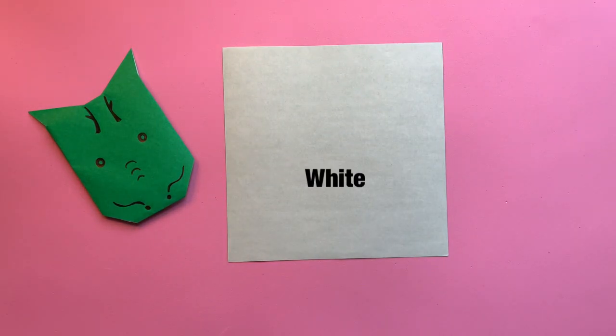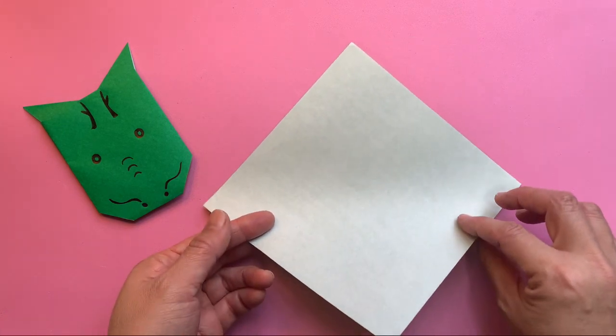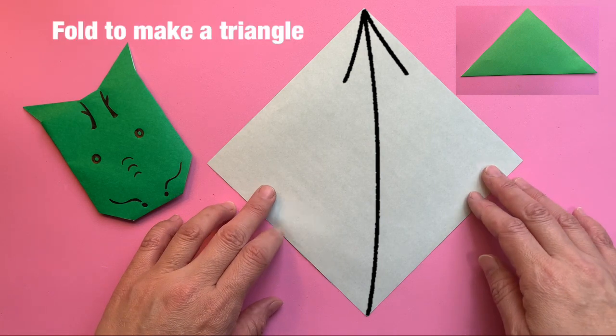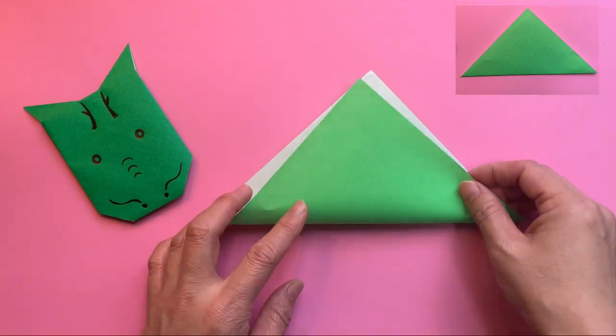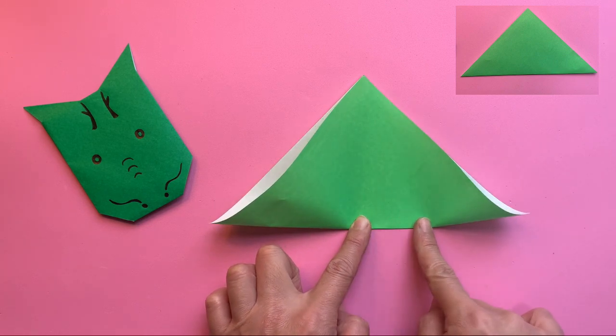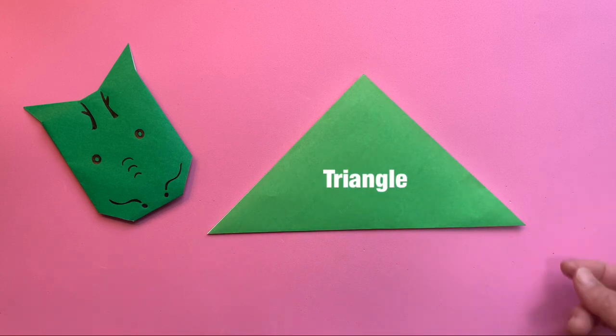Start with the white side. Fold to make a triangle, sankaku ni oru.